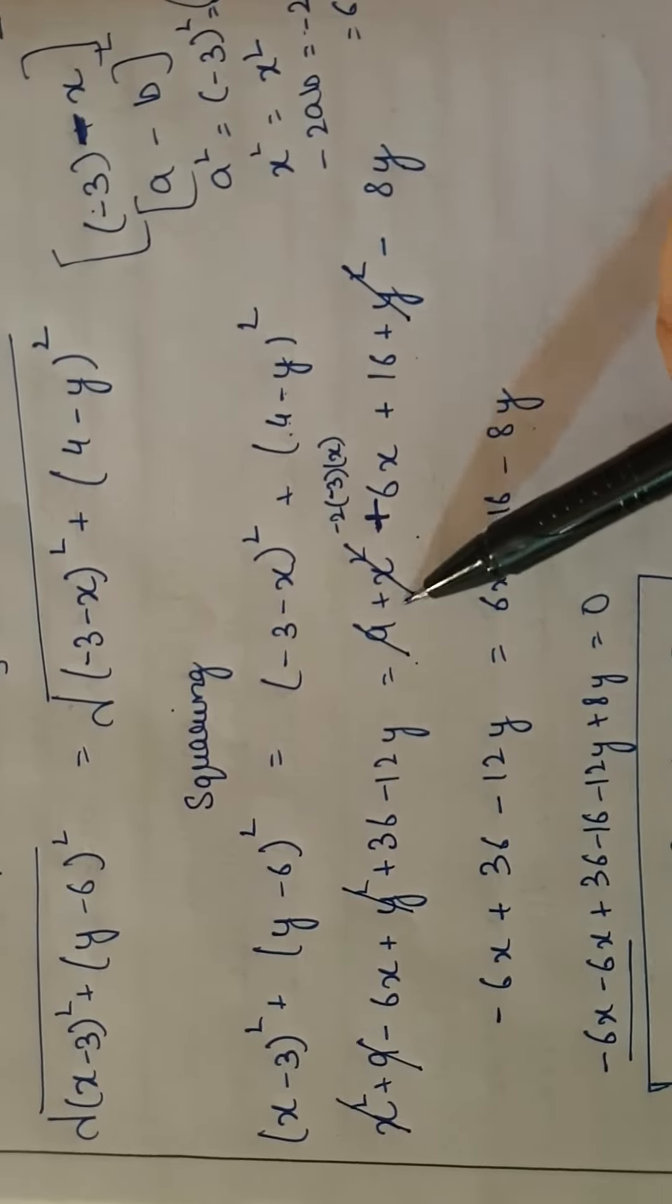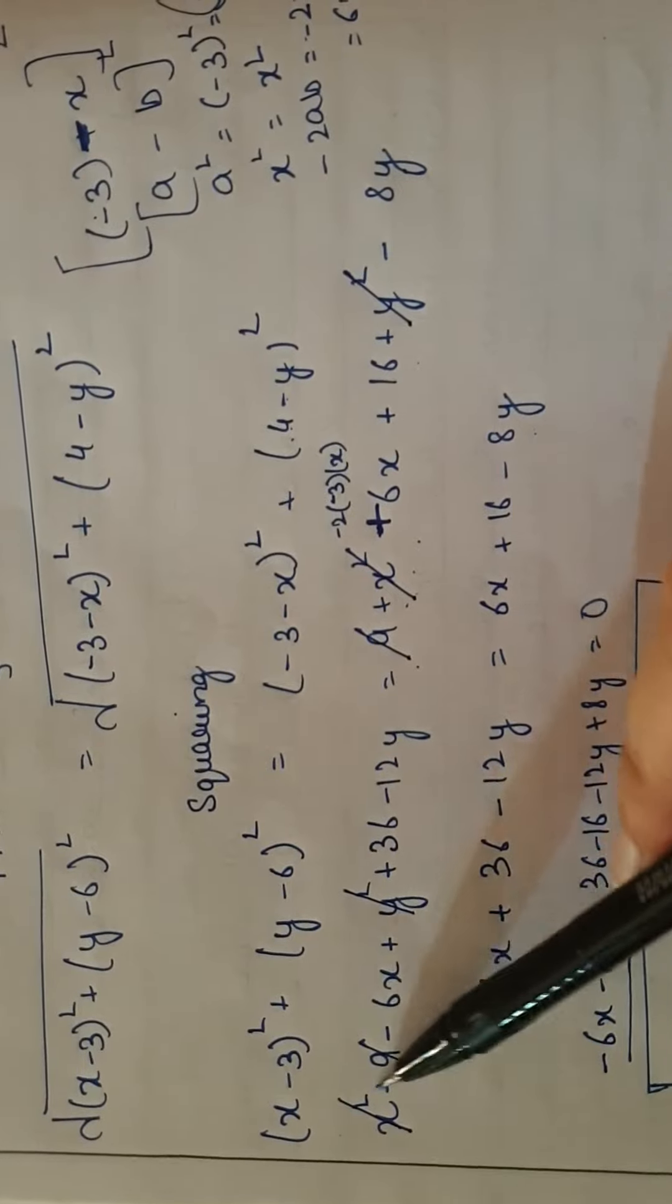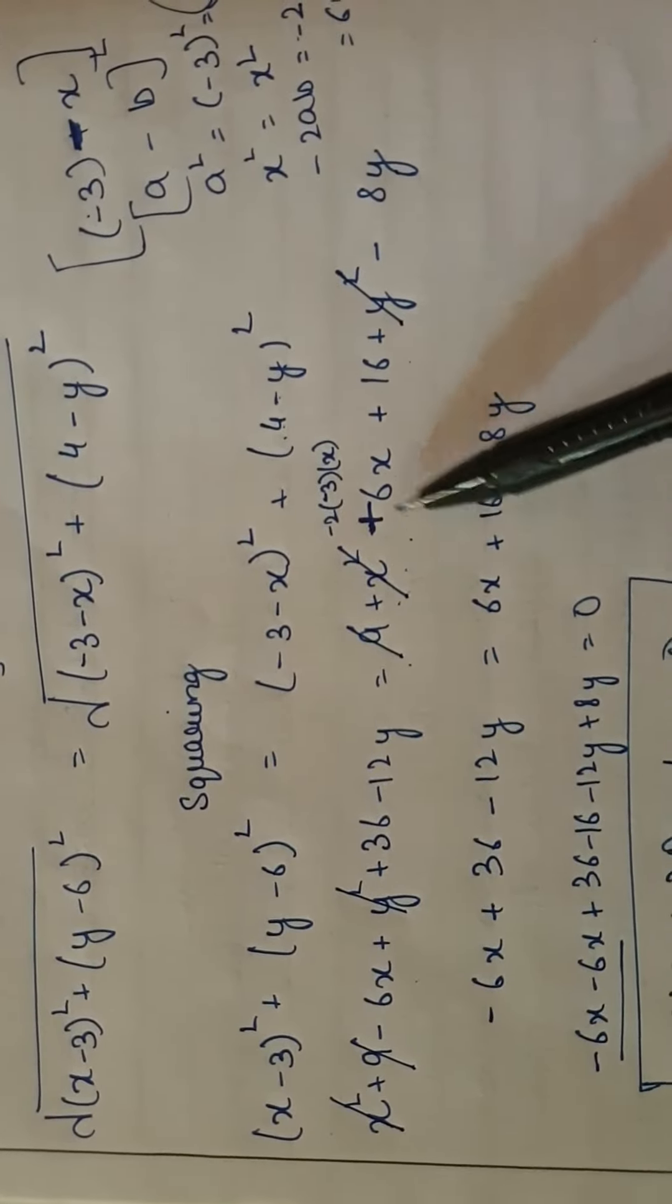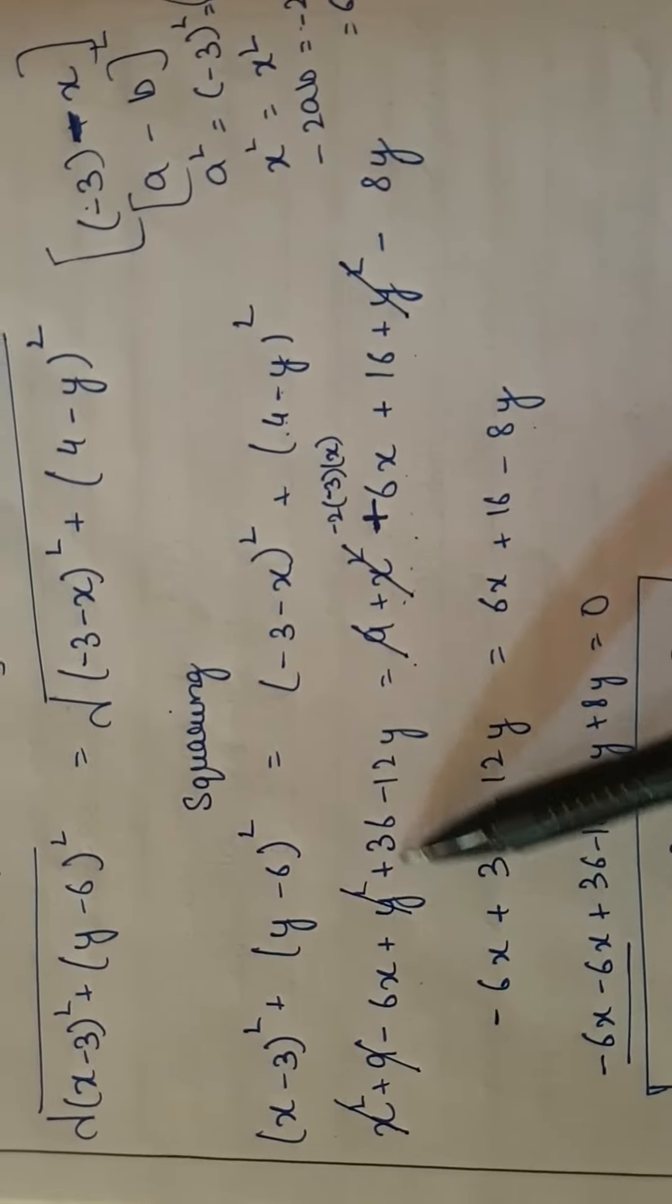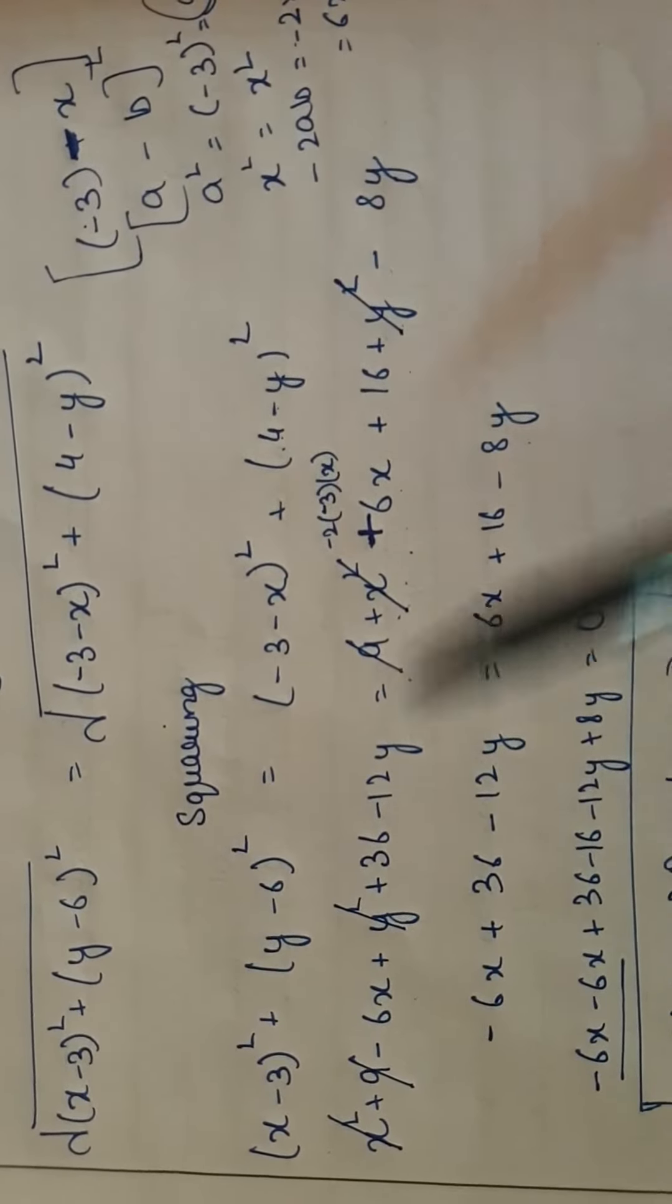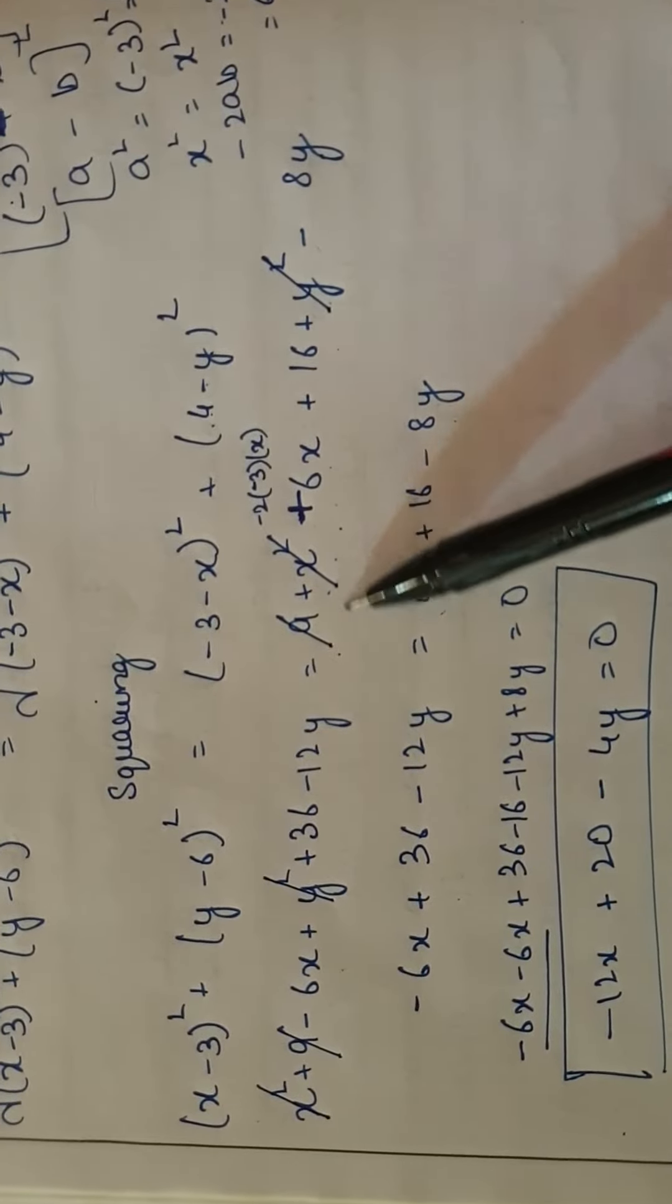Now 9 cancels with 9, x² cancels with x², leaving 6x with its sign.